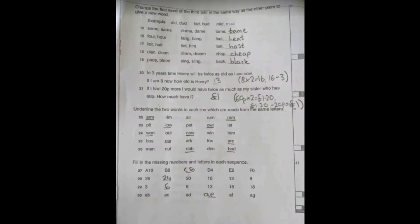Question 15: so it's some same, dome dame, tome tame. So the answer is tame. In the word, the first word has an O and it's changed into an A for the second word. Question 16: four hour, fang hang, feet heat. So the beginning letter is an F in the first word and it changes to an H in the second word. Question 17: lair hair, lint hint, lost host. The phonics goes a bit on that, but again the first letter is an L in the first word and it changes to an H in the second word.